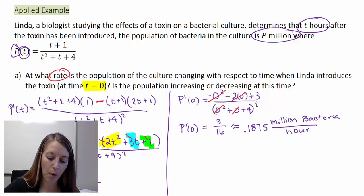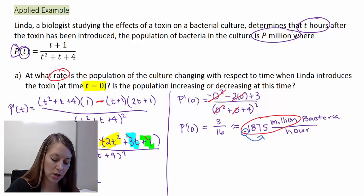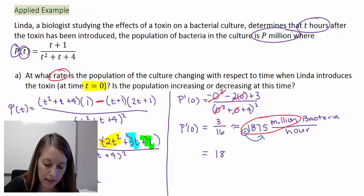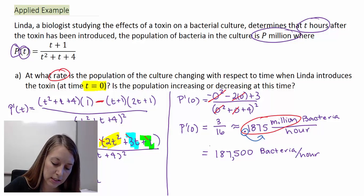But we know that we can rewrite that in a format that makes a little bit more sense. Instead of me saying 0.1875 million, let me rewrite that or multiply these two numbers. Million has six zeros in it. So I just need to move my decimal place over six times. So that gives me 187,500. And again, my label is still bacteria per hour. So that's the answer to our first question.